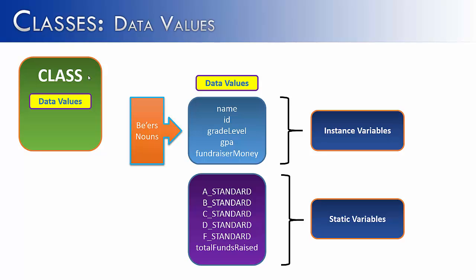If you think of it in terms of a student class you could think of different students. So if I had Billy, Susie, and Jose, they would all have a different name, a different ID, a different grade level, a different GPA and they have all raised different amounts of money for a school-wide fundraiser. So we would call these instance variables or what is true for that particular student. And then on the bottom we have static variables.